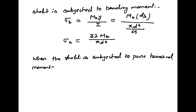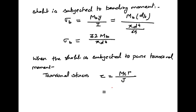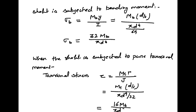When the shaft is subjected to pure torsional moment, the torsional stress tau equals M_T · r / J. With r = d/2 and J = π d⁴ / 32, this simplifies to tau = 16 M_T / (π d³). This is the torsional stress formula.